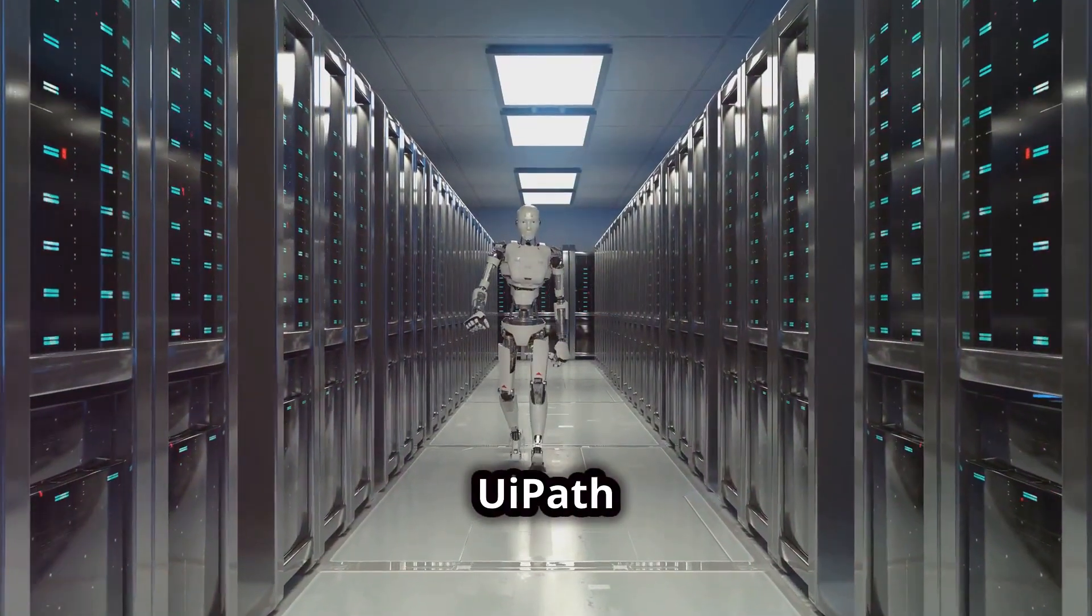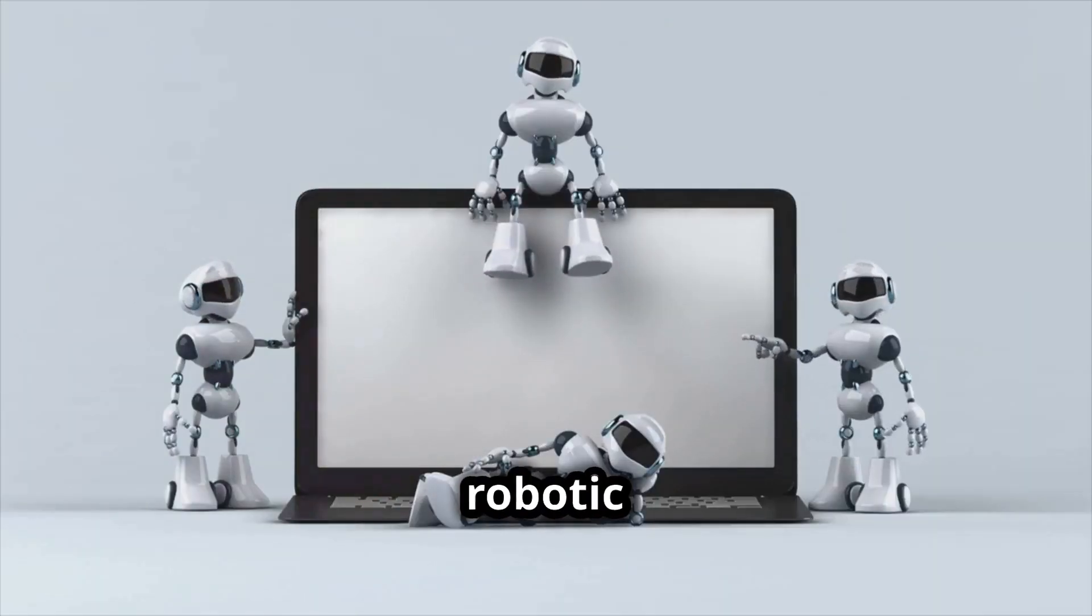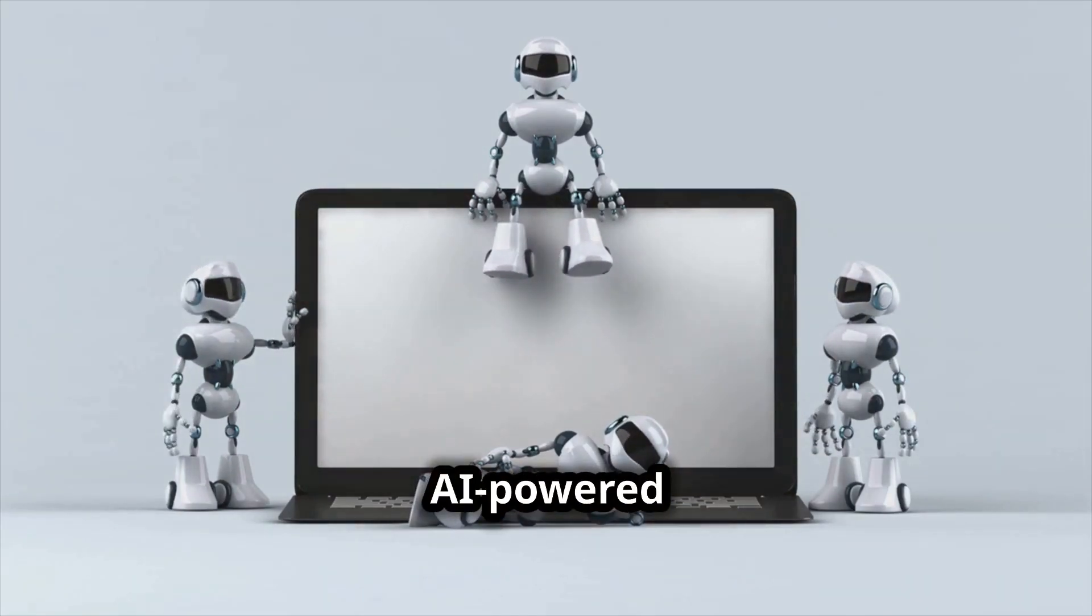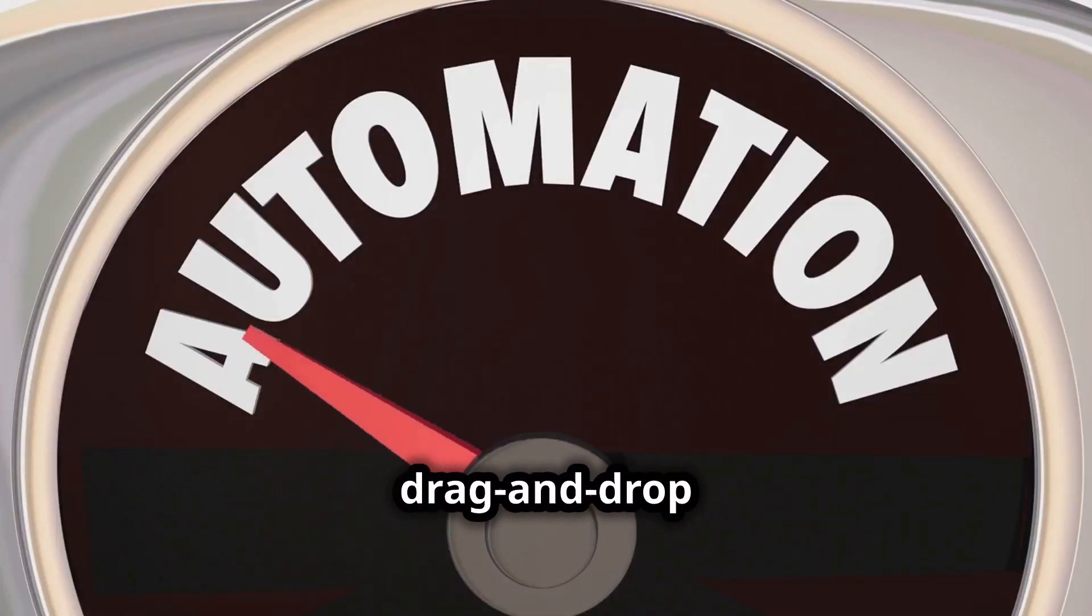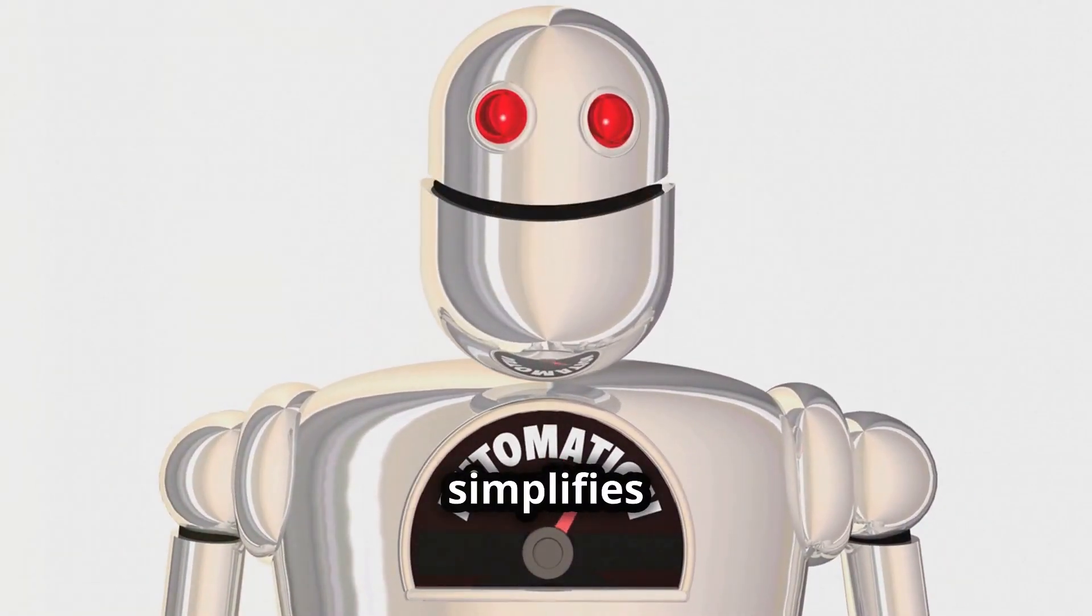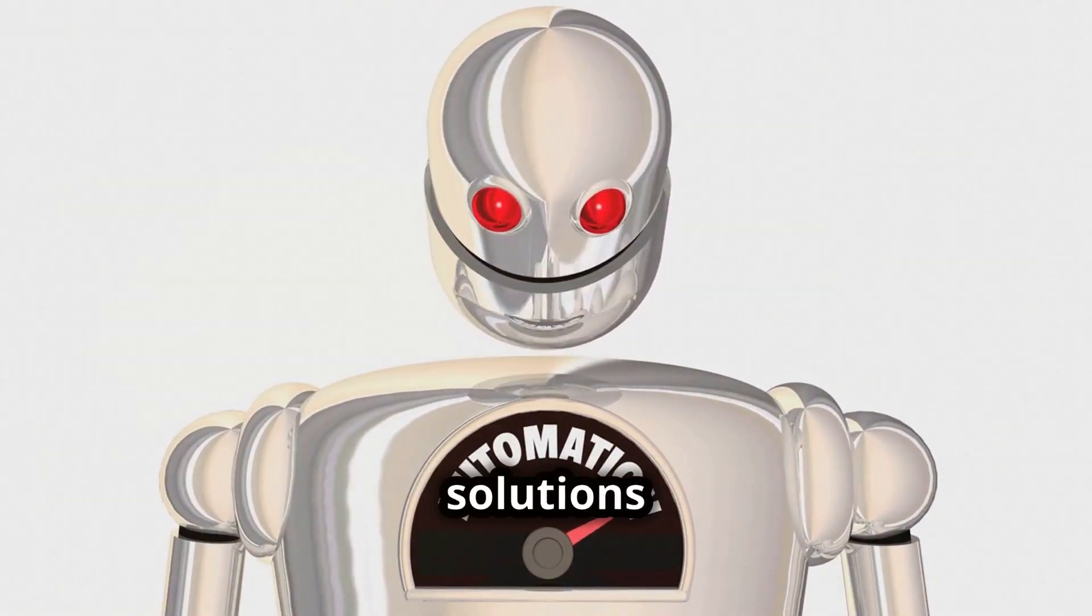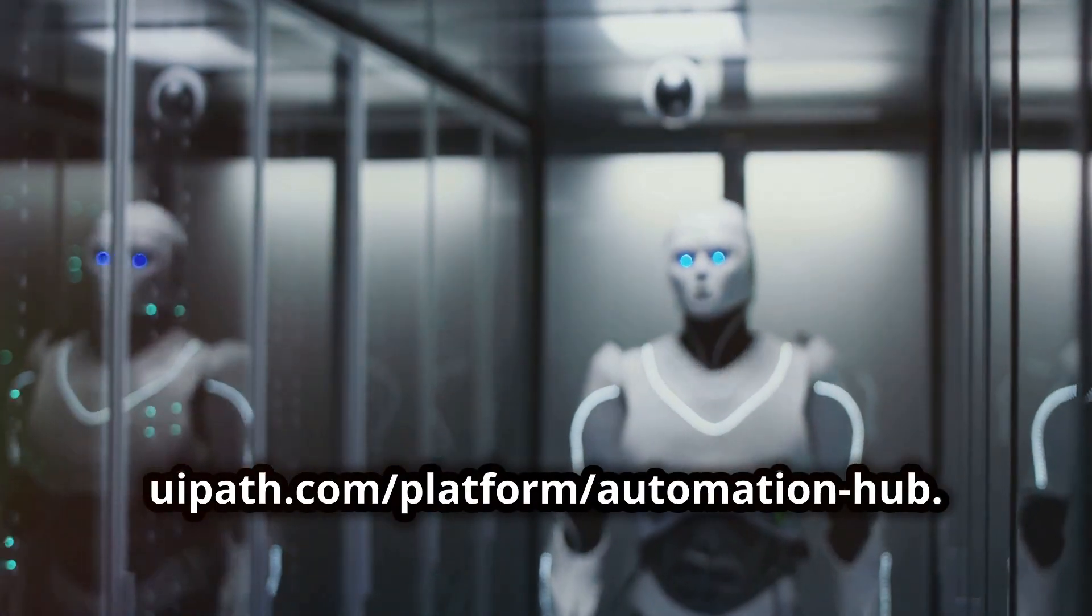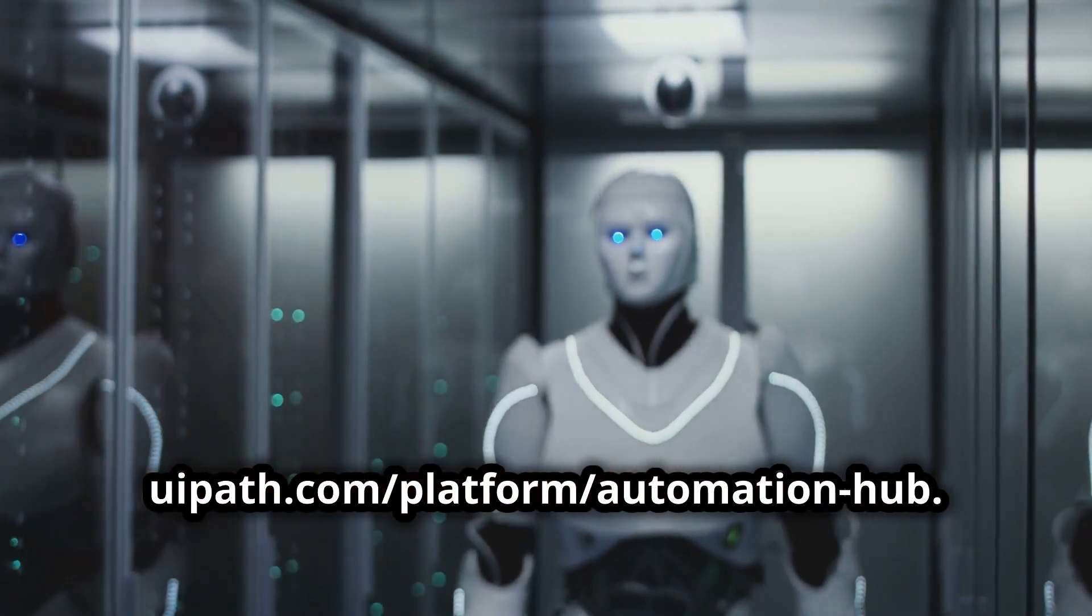Number 10. UiPath Automation Hub. This platform for robotic process automation, or RPA, enables businesses to automate repetitive tasks using AI-powered bots. With its drag-and-drop interface and pre-built automation templates, Automation Hub simplifies the development and deployment of RPA solutions across industries. To learn more, visit uipath.com/platform/automation-hub.